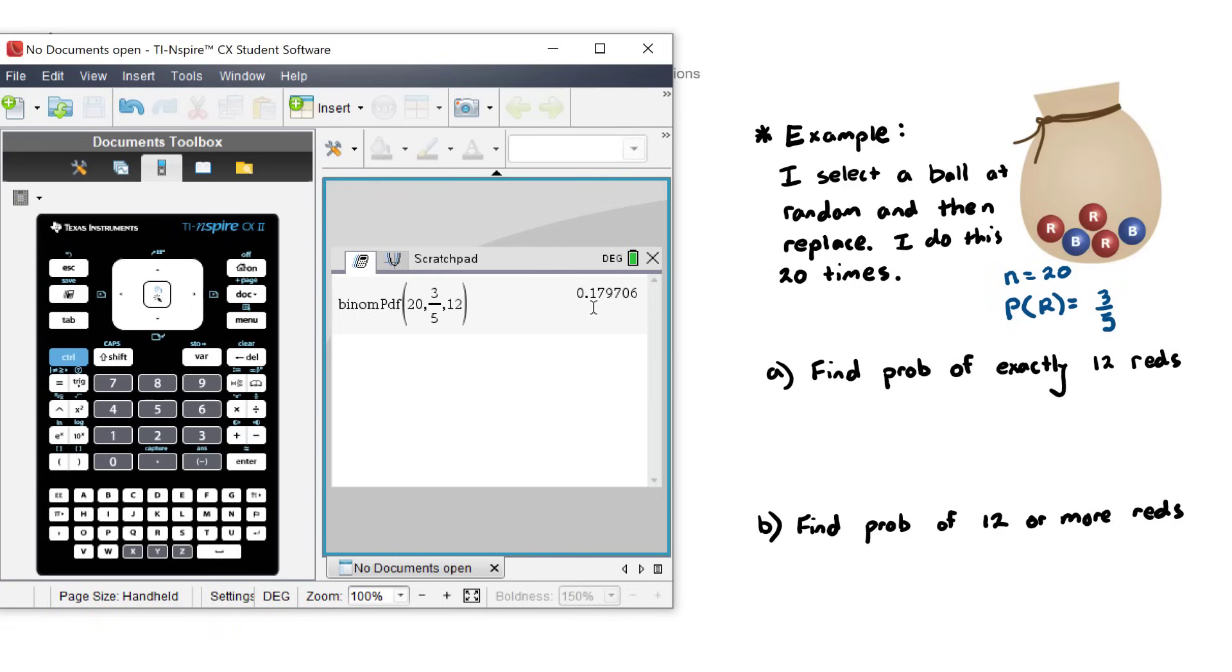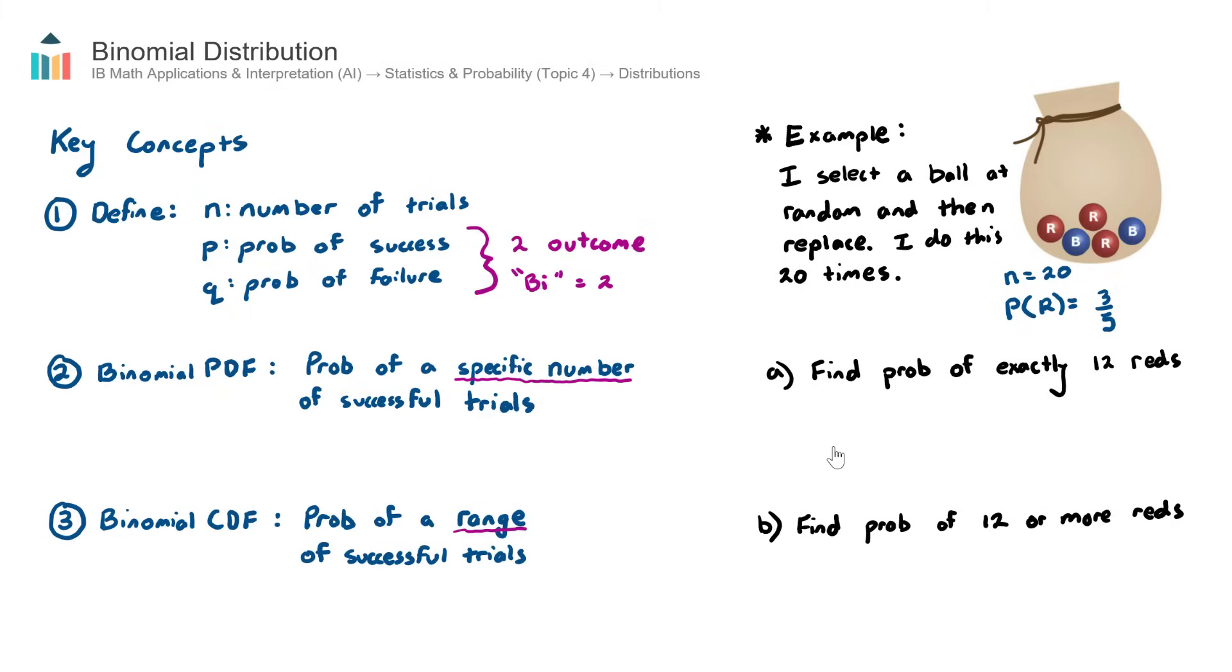And that right there is our probability 0.179. Rounded to three significant figures that actually be 0.18. So the way that we write this is the probability of red, a random variable red, so the number red being a successful outcome, equaling 12 exactly, is equal to 0.18, or 18%.